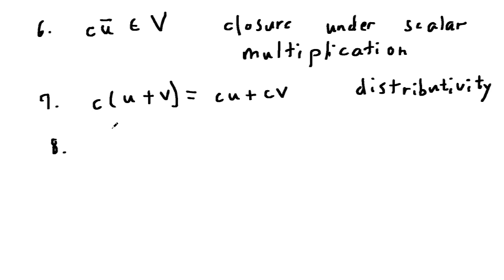The eighth property says when you take c plus d multiplied by the vector u, you also get distributivity: cu plus du.